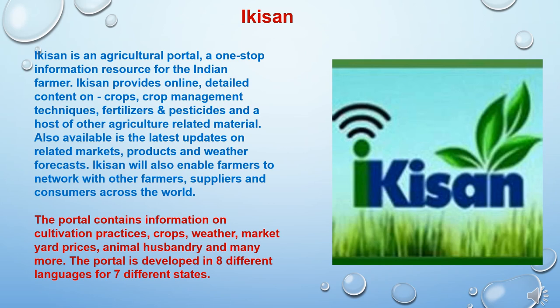Another technology transfer tool is iKisan. iKisan is an agricultural portal and non-stop information resource for the Indian farmer. iKisan provides online detailed content on crops, crop management techniques, fertilizers and pesticides, and a host of other agriculture-related material. Also available are the latest updates on related markets, products, and weather forecasts. iKisan will also enable farmers to network with other farmers, suppliers, and consumers across the world. The portal contains information on cultivation practices, crops, weather, market yard prices, animal husbandry, and many more.